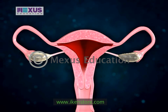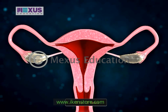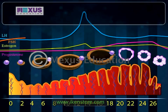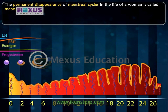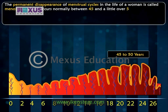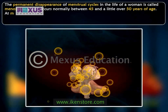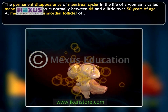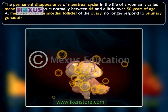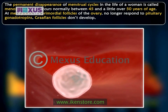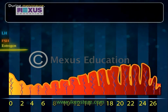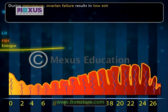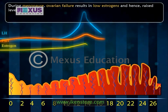The appearance of the first menstrual flow in a woman's life, between 11 to 13 years of age, is called menarche. The permanent disappearance of menstrual cycles is called menopause, which occurs normally between 45 and a little over 50 years of age. At menopause, the primordial follicles of the ovary no longer respond to pituitary gonadotropins. Graafian follicles don't develop, ovulation does not occur, and the possibility of pregnancy ceases. Ovarian failure results in low estrogens and hence raised levels of FSH and LH.